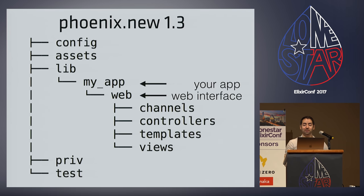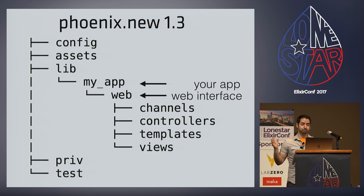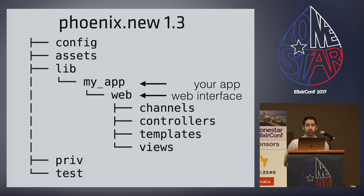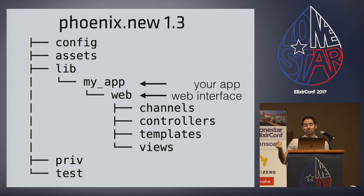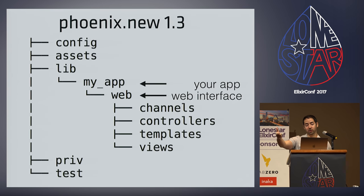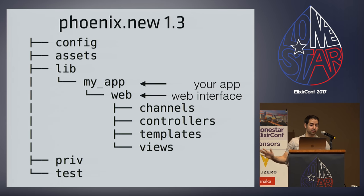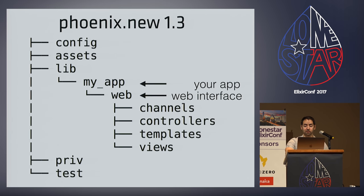The only special thing is we're going to give you a root level assets directory. So now we don't pollute your root level project with a package.json or node_modules folder. Regardless of what you want to use — Brunch, Ember, Webpack — it'll just live inside assets, and your 30 million node files in node_modules will live inside assets. As long as your asset builder can build your assets from the assets directory into priv/static, then it's fine. This is a big win.